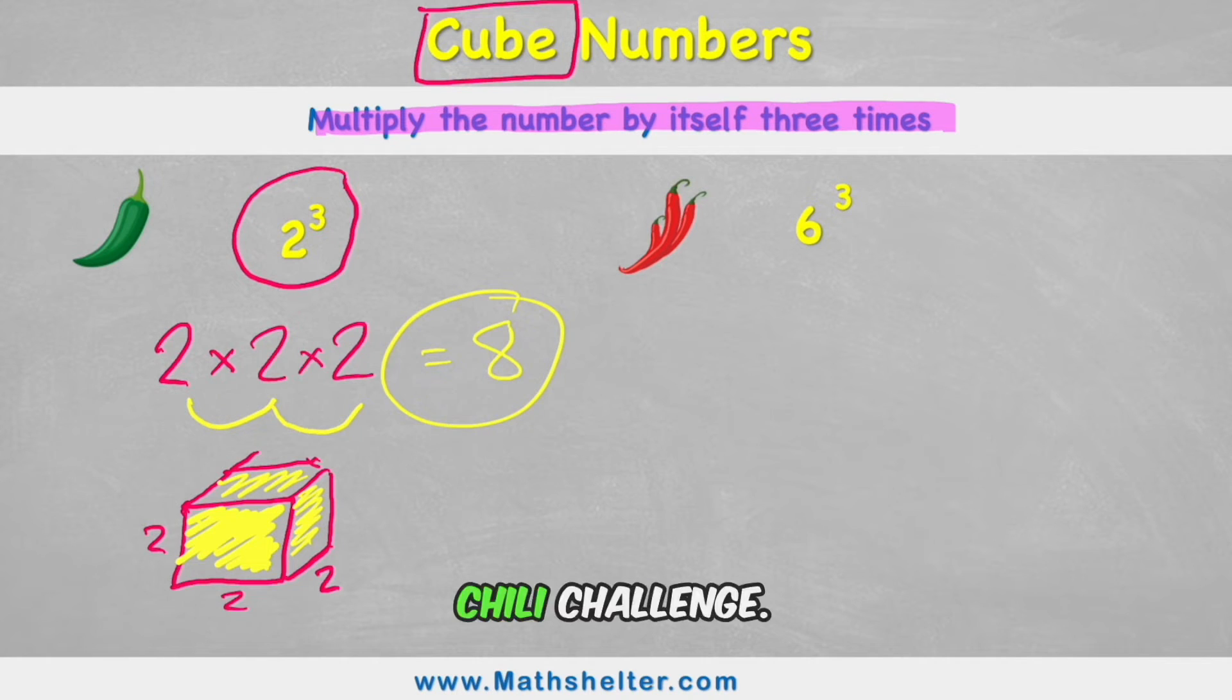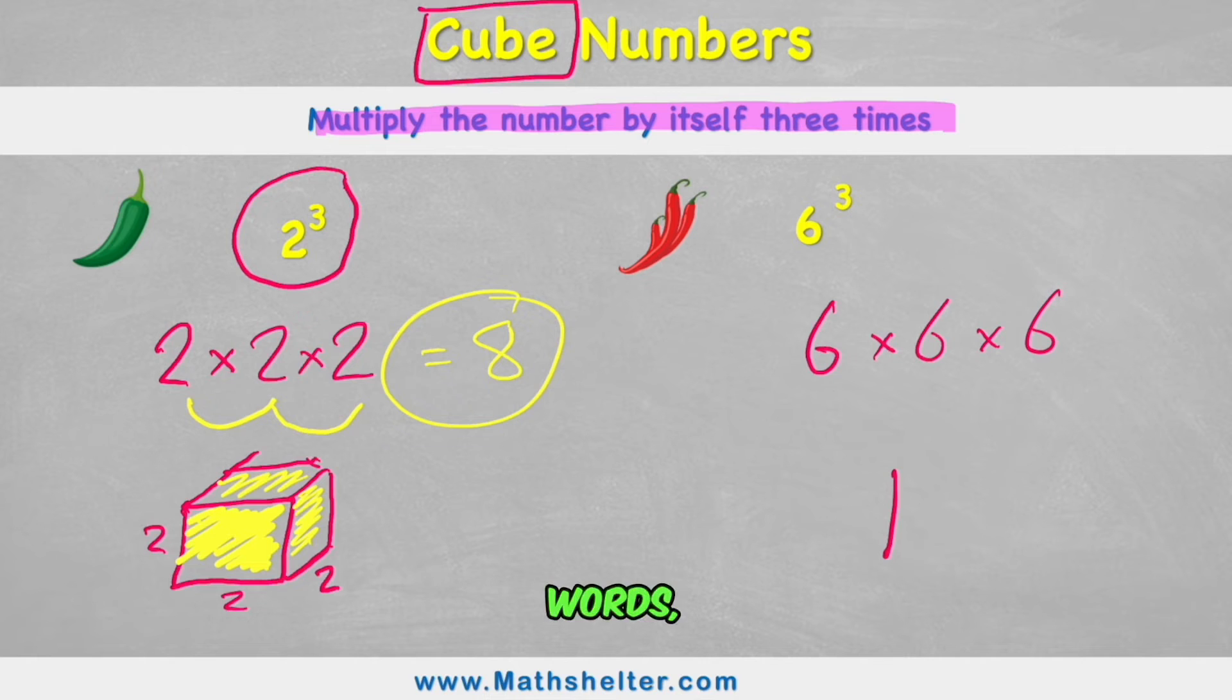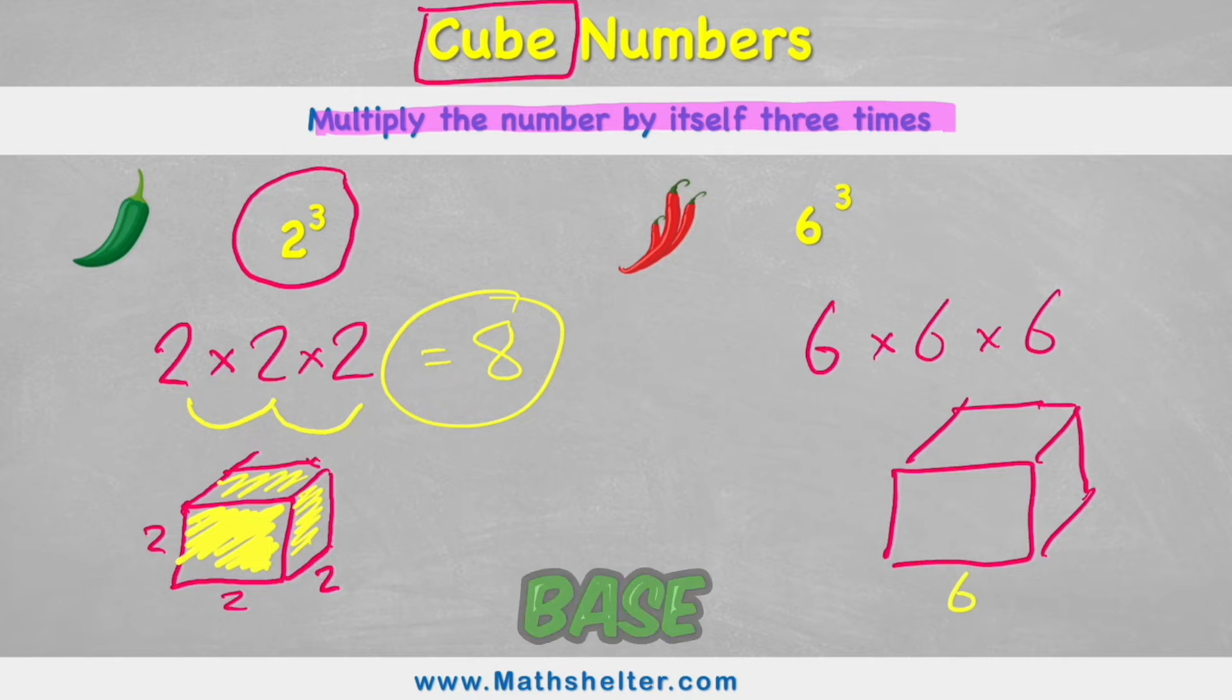Let's look at the same thing with the red chili challenge. This time we have six cubed. So we have six times six times six. Or in other words, we have a cube whose lengths are all six. So the base is six, the height is six, and the width is six.